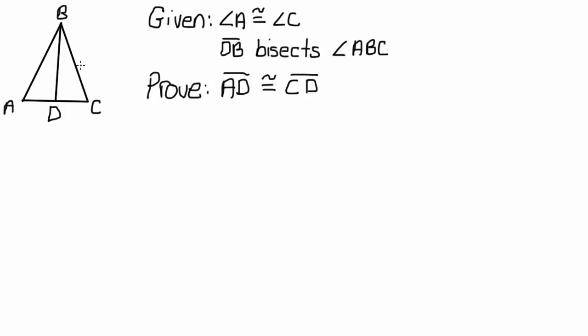The first thing that I always tell you to do is mark off what you've been given on the picture. So angle A is congruent to angle C, so we're going to come over here and say angle A is congruent to angle C. And then as far as DB bisects angle ABC, we're going to do something with this in a second, but first let's set up our two-column proof.